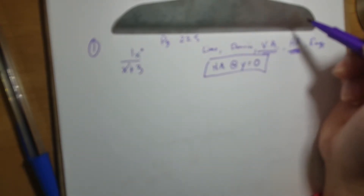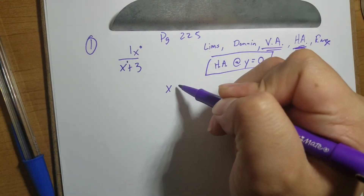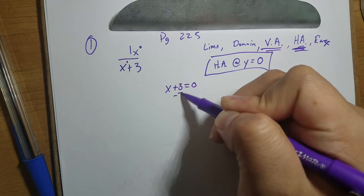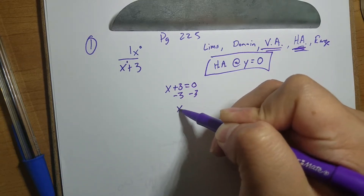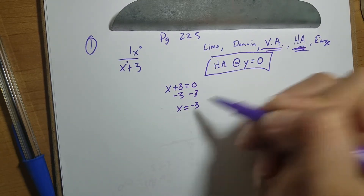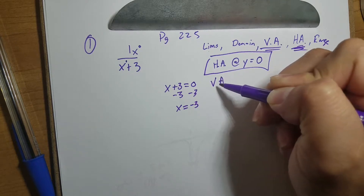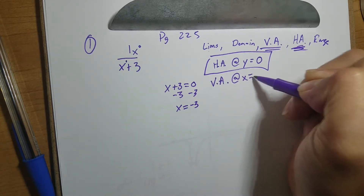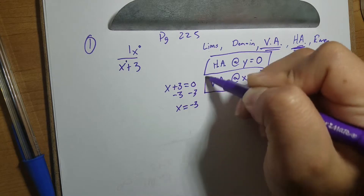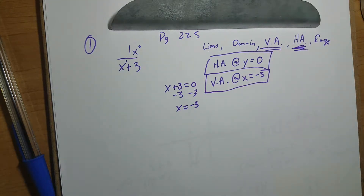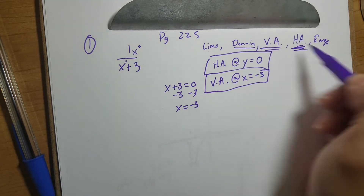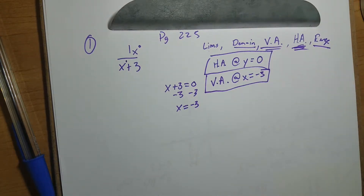Now let's look at our vertical asymptote. To find a vertical asymptote, we make the denominator equal to zero. So x plus three equals zero, and we solve for x by subtracting three from both sides, giving us x equals negative three. So our vertical asymptote is at x equals negative three.